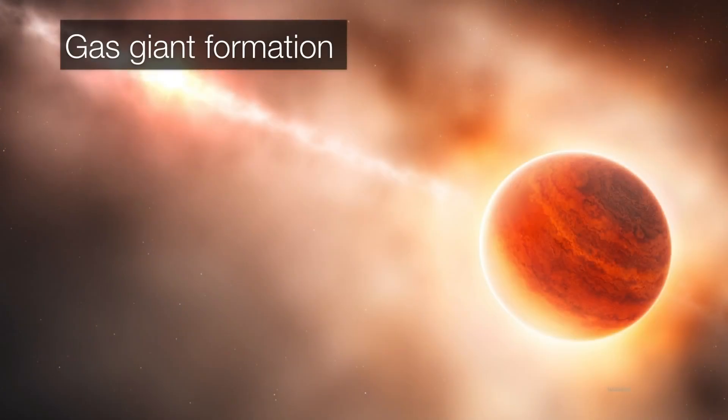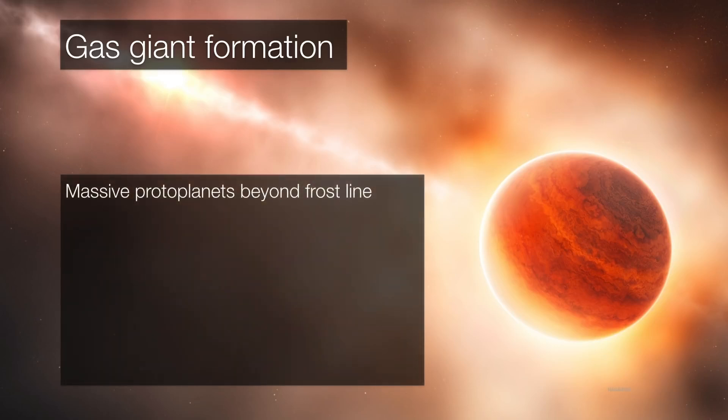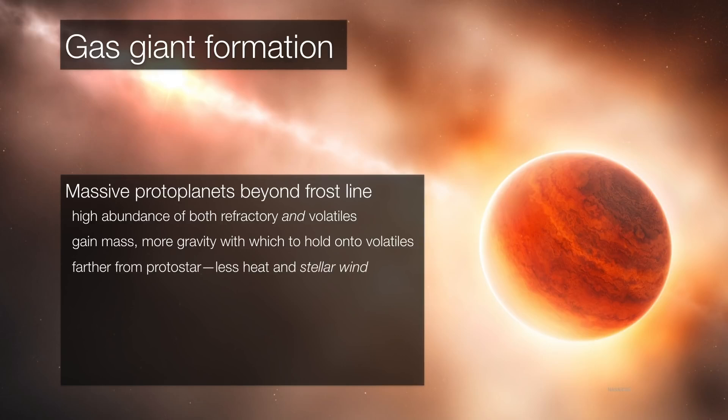Returning our attention to the gas giants, they too are forming out of little disks within the disk. They're going to form well beyond the frost line, where there is a high abundance of both refractory elements and volatiles, so they have everything. They gain mass by colliding with additional planetesimals. Because they have more mass, because they're now proper proto-planets in their own right, they're able to accrete these volatiles. They're farther from the protostar, so there's less heat, less stellar wind, and a greater abundance of these volatiles to begin with.